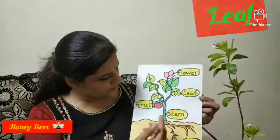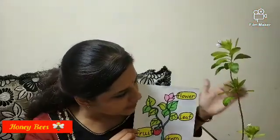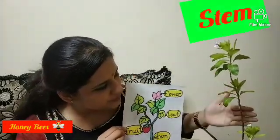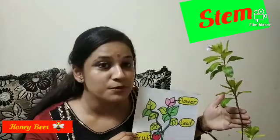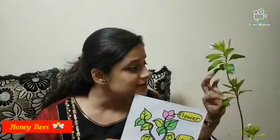Next is stem. Can you see the stem over here? So beautiful stem. This is in brown colour, or sometimes it can be in light green or dark green colour also.